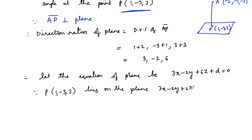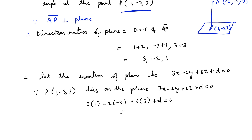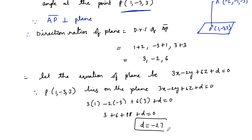Since point P(1, -3, 3) lies on the plane, substituting into 3x - 2y + 6z + d = 0 gives: 3(1) - 2(-3) + 6(3) + d = 0, which is 3 + 6 + 18 + d = 0, so 27 + d = 0.